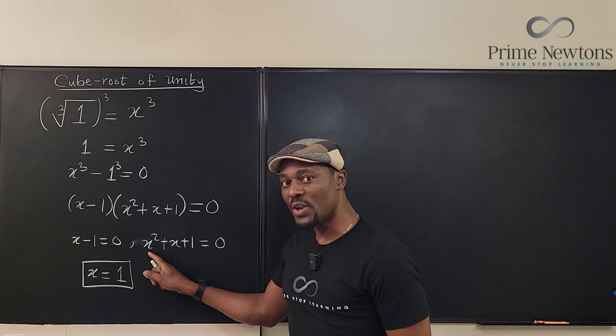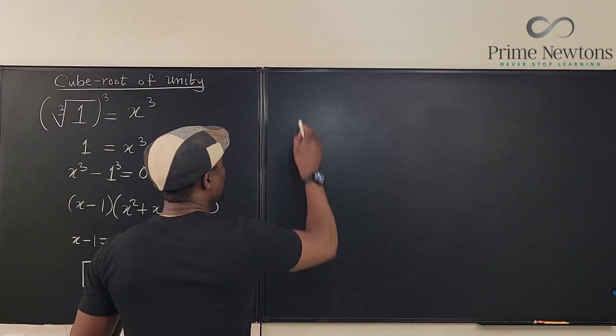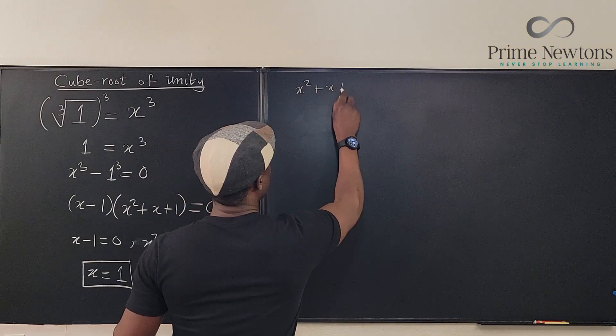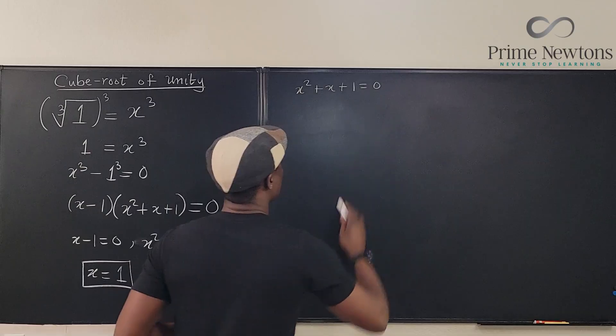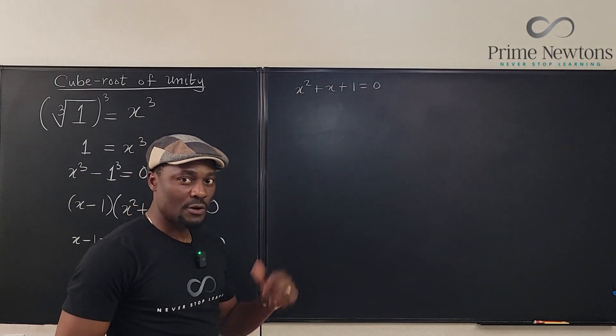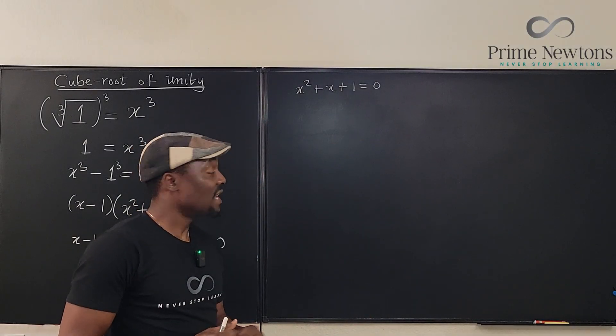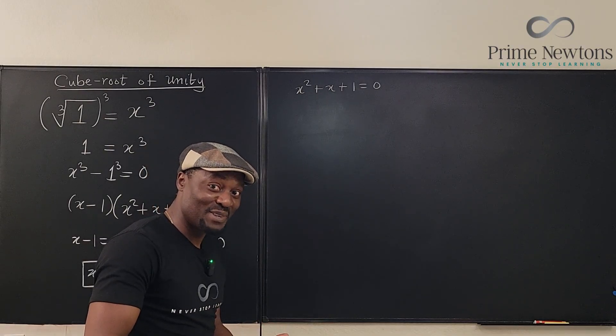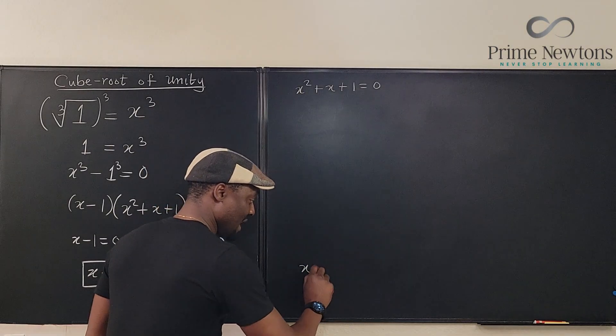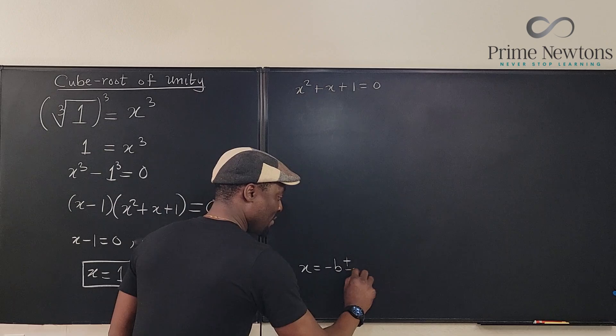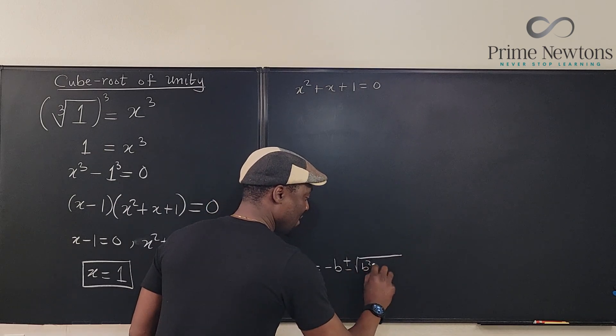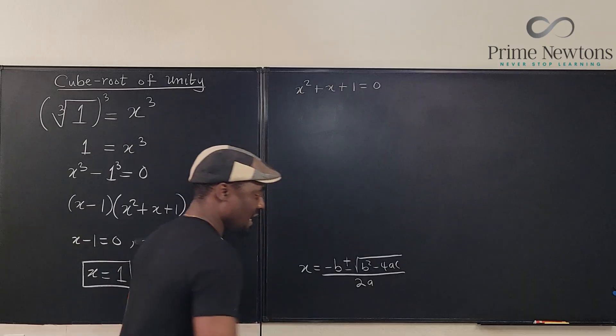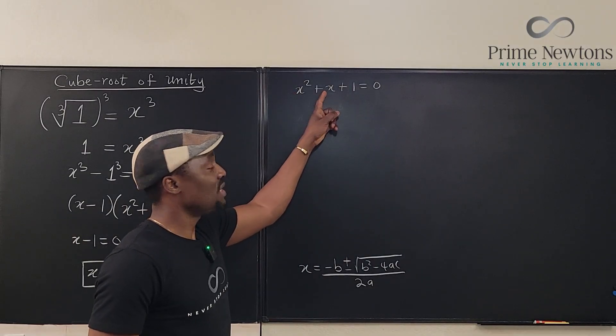So, we're gonna equate this to 0 and say x squared plus x plus 1 is equal to 0. How do we solve stuff like this? We can't factor it and we don't know the answer. We use the quadratic formula. For the quadratic formula, x is minus b plus or minus the square root of b squared minus 4ac over 2a. In this case, our a is 1, our b is 1, our c is 1.